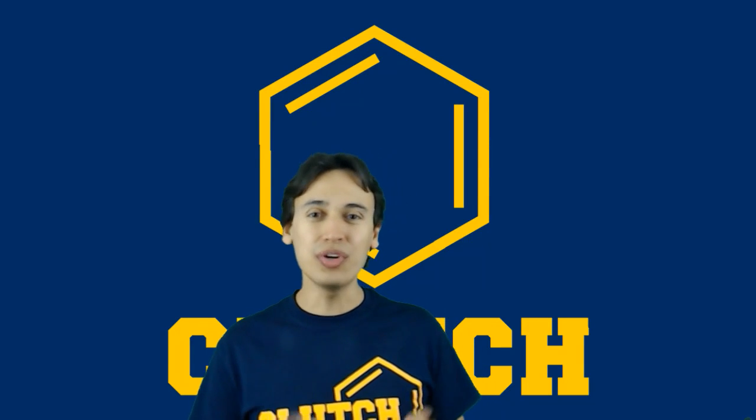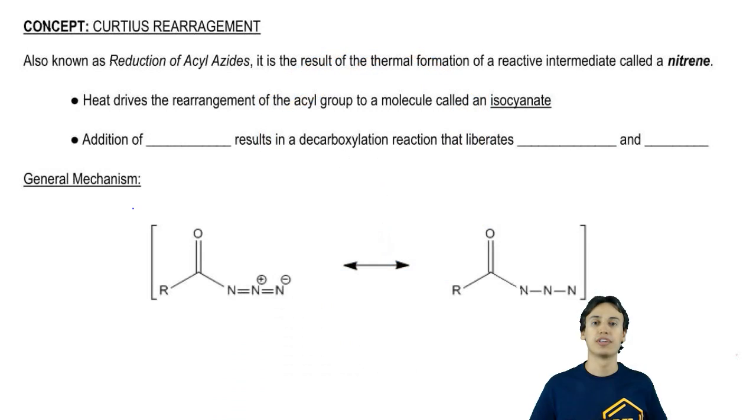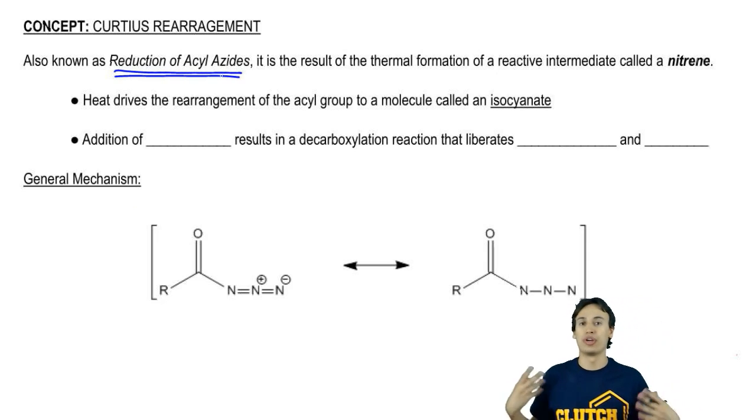Hey guys. In this video, we're going to talk about a really important synthetic pathway called the Curtius rearrangement. This reaction also goes by another name: the reduction of acyl azide. That name really describes what's going on here.